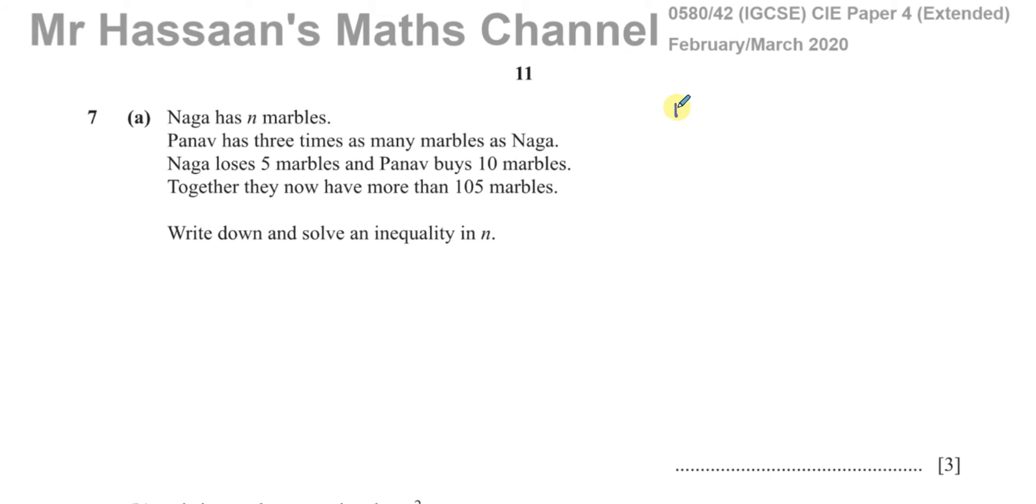So I'm going to just take this, break it down step by step. A lot of students get confused by this type of question. Just break it down step by step. So it says Naga has N marbles. So he starts off with N marbles. And Panav has three times as many marbles as Naga. So that's three times N.